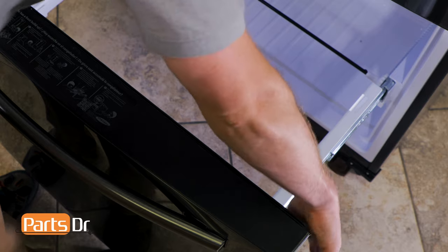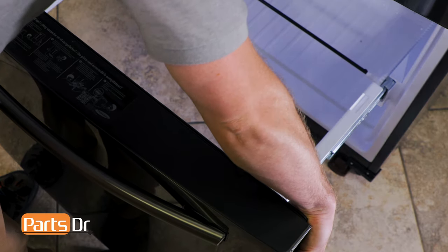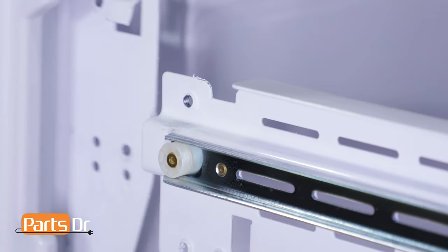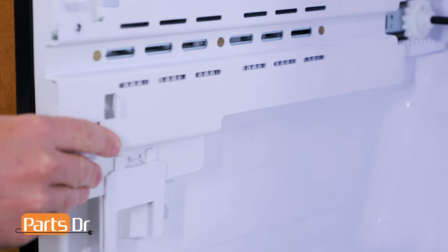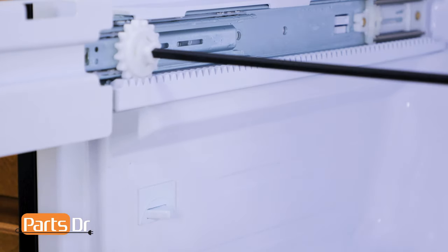Next, we can remove the freezer door by grabbing both sides, lifting up to remove the door brackets from the slide rails, and lifting out to remove. With the door removed, make sure the freezer slides are fully extended to give you easier access to the light switch.